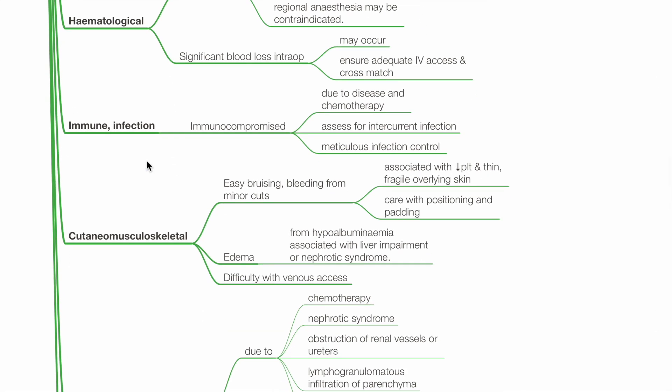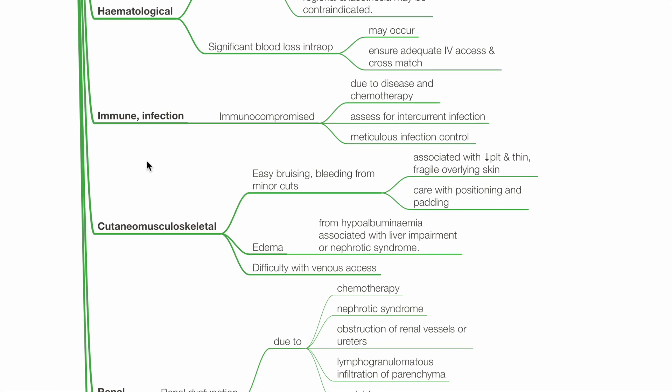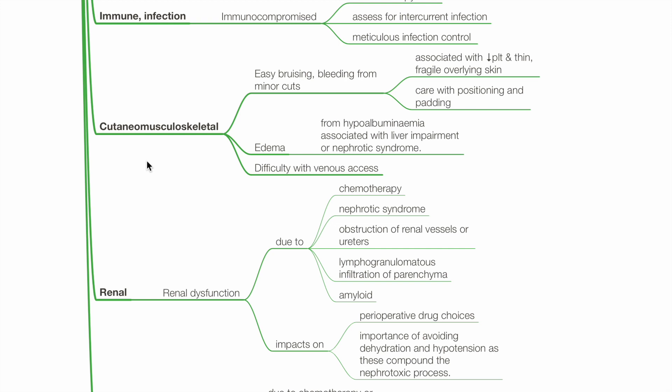Immune and infection: The patient is significantly immunocompromised due to disease and chemotherapy. Assess for intercurrent infection and provide meticulous infection control. Cutaneous/musculoskeletal: There may be easy bruising and bleeding from minor cuts, associated with thrombocytopenia and thin, fragile skin. Care with positioning and padding is required.